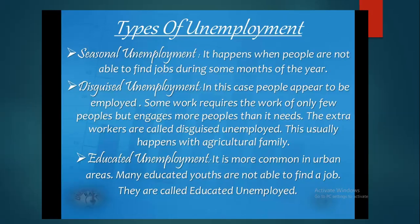Disguised unemployment. In this case, people appear to be employed. Some work requires only two people, but engages more people than it needs. The extra workers are called disguised unemployed, and this usually happens with agricultural families. Disguised means whatever is seen, it's not actually there. So people are working there but there is no need for all of them. If in a farm there is need for only 5 people but there are 10, the remaining 5 come under disguised unemployment.